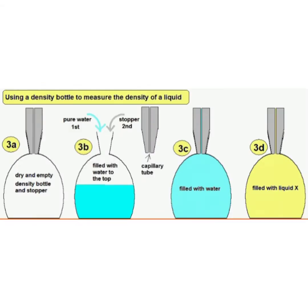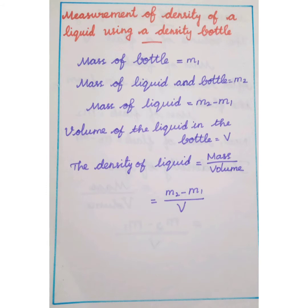To find the density using a density bottle: the mass of the dry empty bottle is measured and noted as M1. Then the liquid is poured into the bottle; if the liquid overflows, insert the stopper. Measure the mass of the bottle with liquid, denoted as M2. Therefore, mass of liquid is M2 minus M1, the volume of liquid in the bottle is V, and the density of liquid is M2 minus M1 divided by V.